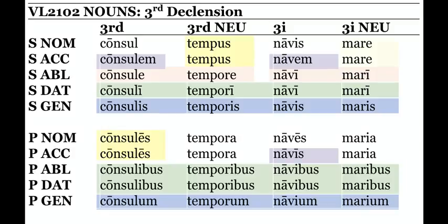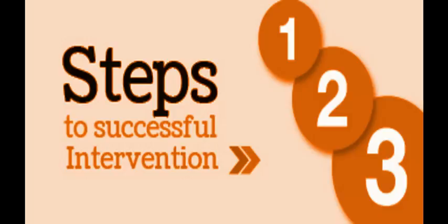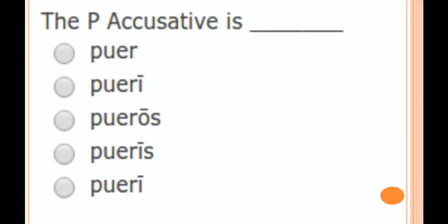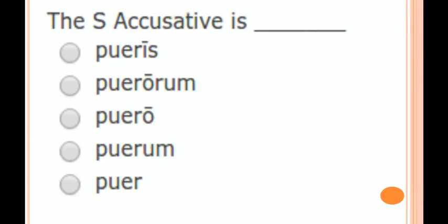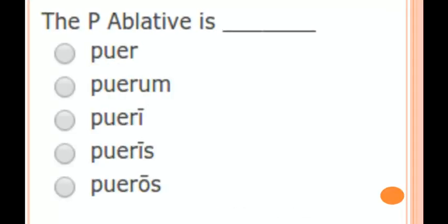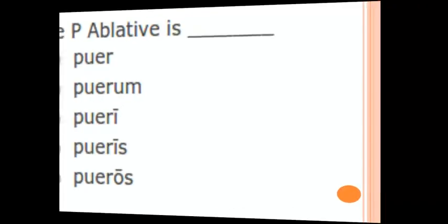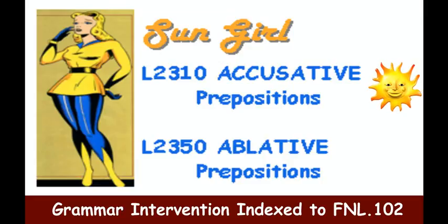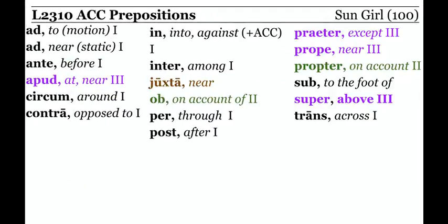Moving on, there are your successful steps. The plural accusative is right there; the singular accusative is right there. Because it's a second declension noun, that -o tells you it's second declension, unless of course it's a strange third declension — but if it is, the -e will be there. All right, let's work with accusative prepositions.